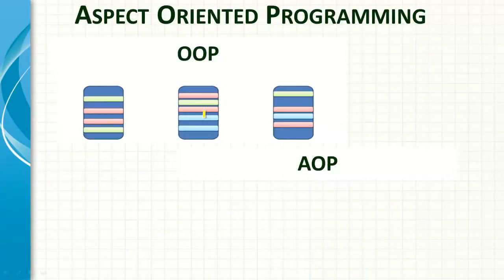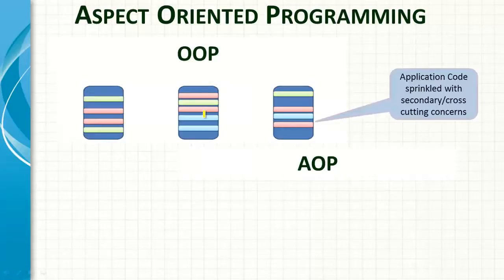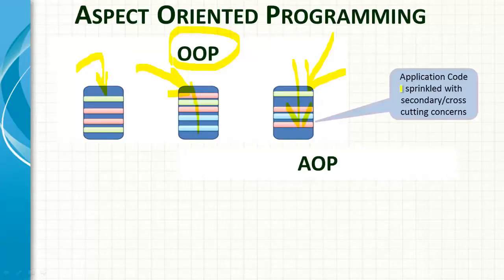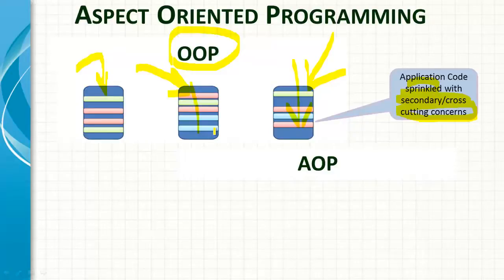Now let's see the difference between OOP and AOP — aspect-oriented programming. In OOP, everything is a class and these represent the application code. The problem is that application code gets sprinkled with secondary and cross-cutting concerns. There are two types of concerns: the primary concern, which is your core business logic, and the secondary concern. For example, in a banking domain, doing a payment is the primary concern.